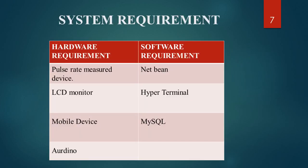The next point is system requirements. There are two types: hardware requirements and software requirements. Hardware requirements are: first, a pulse rate measuring device; second, an LCD monitor; third, a mobile device; and fourth, Arduino. Software requirements are: first, NetBeans; second, HyperTerminal; and third, MySQL.